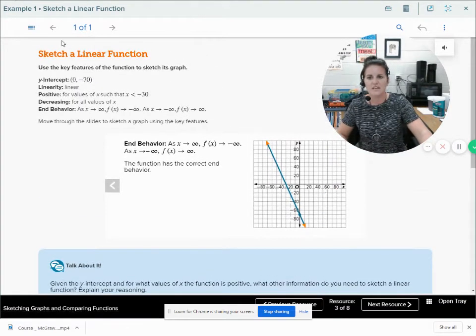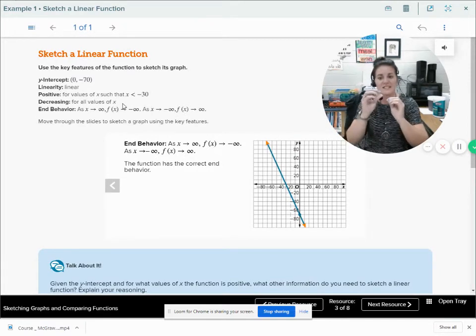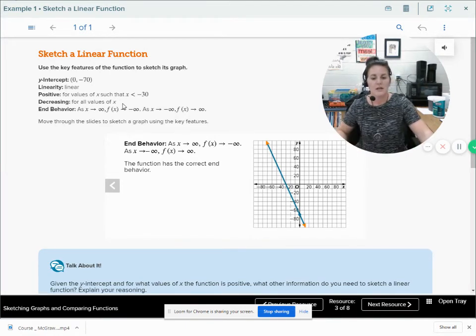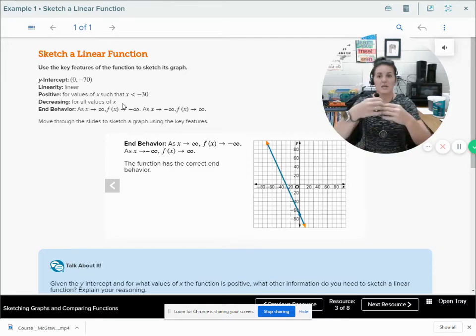And then last of all, the end behaviors. As x is going up, my y's are going down. And as x is going down, my y's are going up. So we have a visual of what our graph should look like. Kind of a neat thing that we can come up with a graph just by, we don't have necessarily exact points other than 0, negative 70, but then we can come up with all this other information. Since they've given us this information, we can use that to come up with this line and sketch it on our graph.